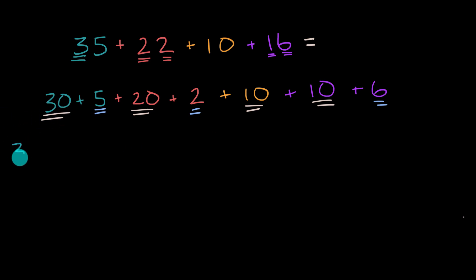So we have 30 plus 20, plus 10, plus 10, plus that purple 10. So I've already accounted for the 30, the 20, that 10, and that 10.